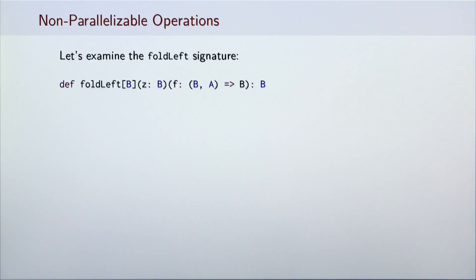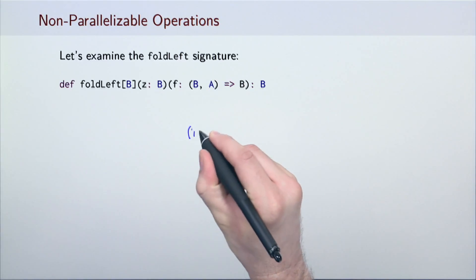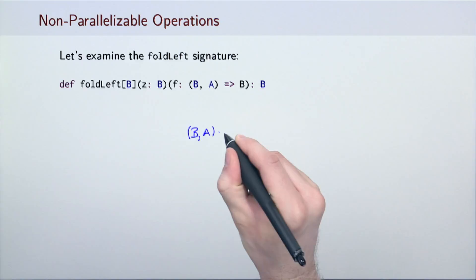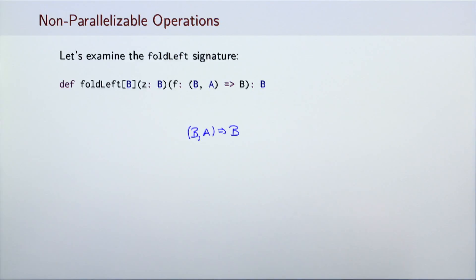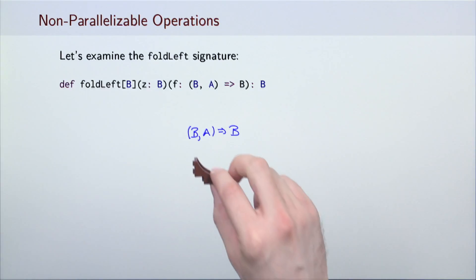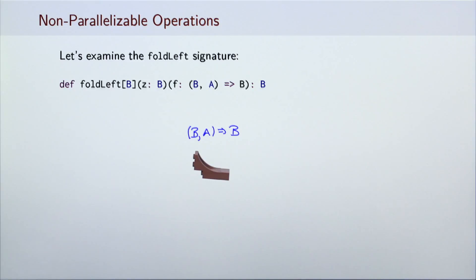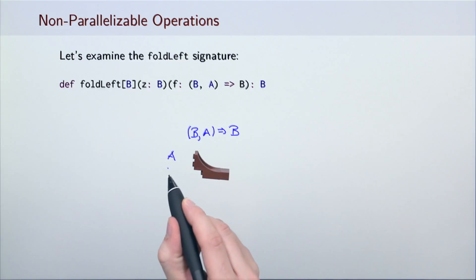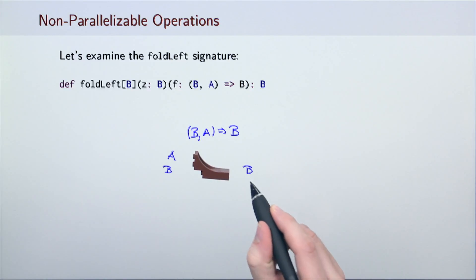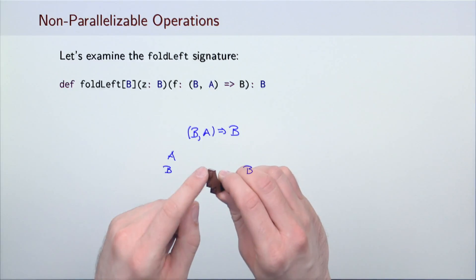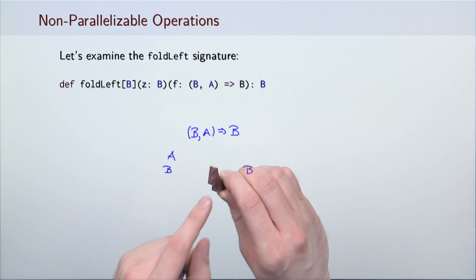I argue that foldLeft can do this in only one way. To understand why, note that foldLeft's job is very similar to putting together LEGO bricks. Let's establish an isomorphism between functional programming and playing with LEGOs.